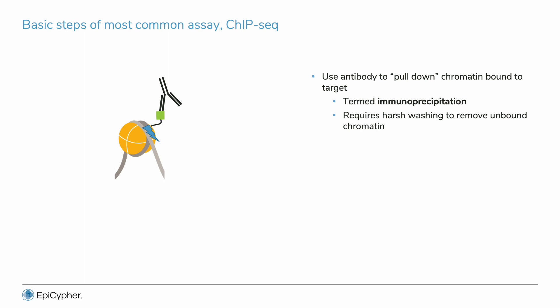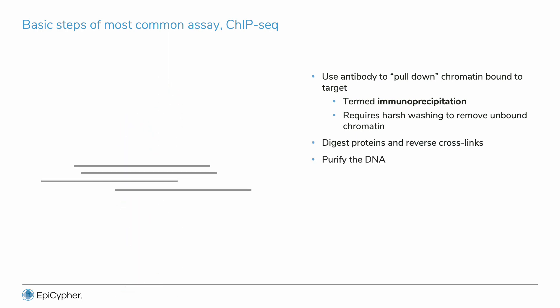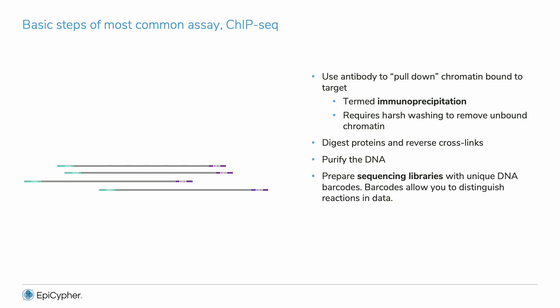Additional optimization may be required. After pull down, you digest proteins, reverse cross-links, and purify DNA. Then you prepare what are called sequencing libraries. This process adds unique barcodes to each reaction, so sequencing data can be assigned to the correct reaction during data analysis. After library prep, you're ready to sequence.